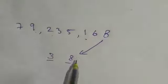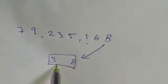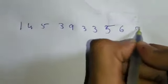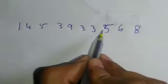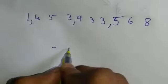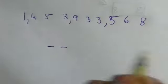The answer is thirty eight. Then take another example. Number 145393356 eight. First you should group it, three numbers.